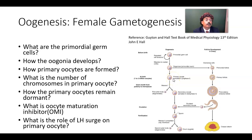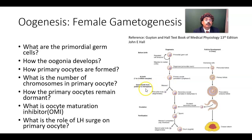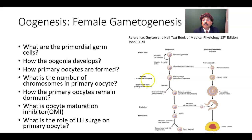At puberty, around 10 to 15 primary oocytes will go through development and one of them will ultimately become the mature ovum. At birth we have 1 to 2 million oocytes and no oogonium. Each month from puberty to menopause, every menstrual cycle around 10 to 20 primary oocytes will go through development, and one of them will become a mature ovum.